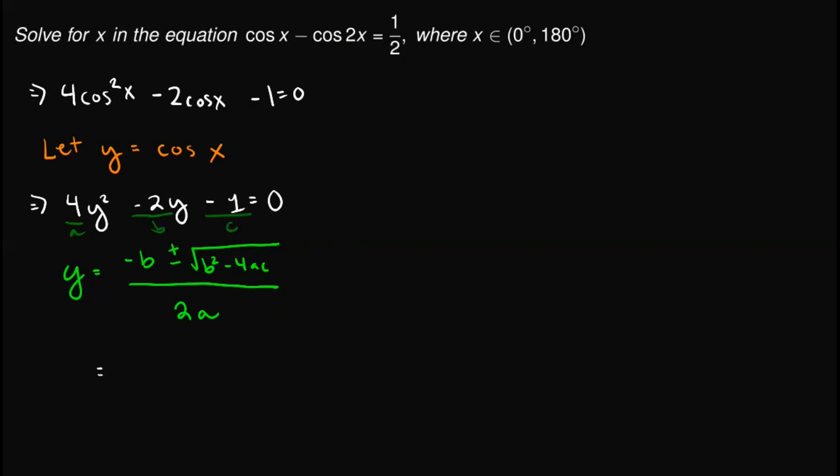So y is equal to negative b is negative times negative 2, which is just 2, plus minus square root of b squared. Let's write it, negative 2 squared minus 4 times a is 4, c is negative 1, all over 2a.